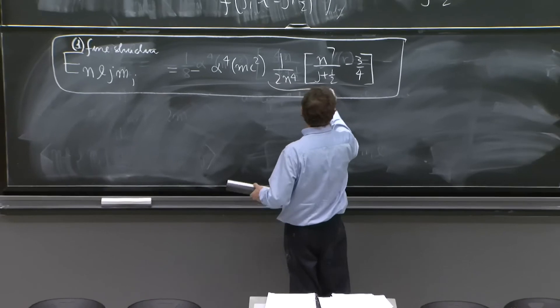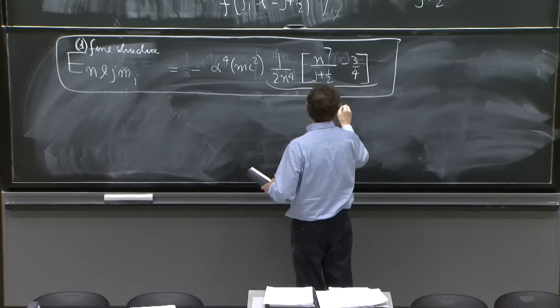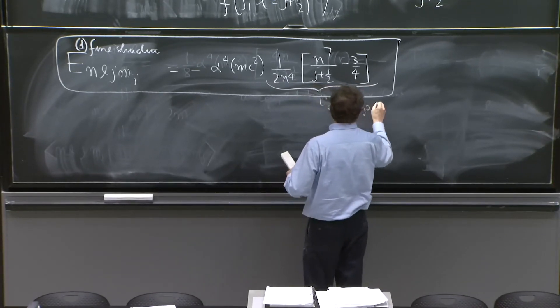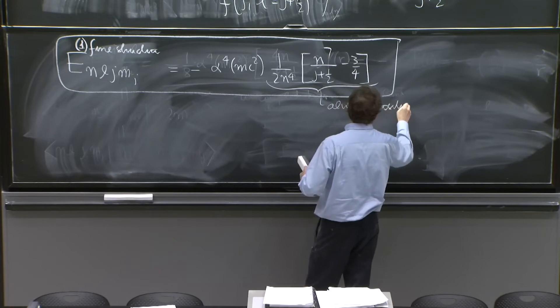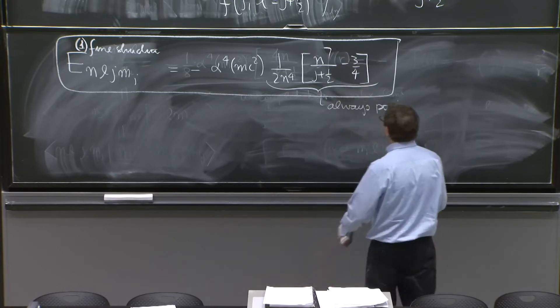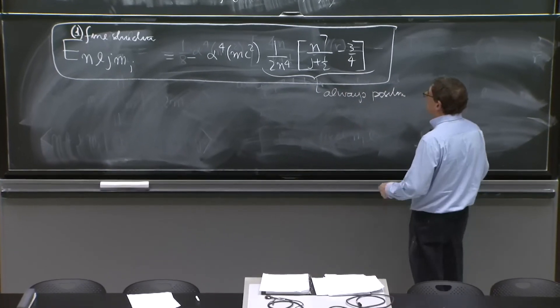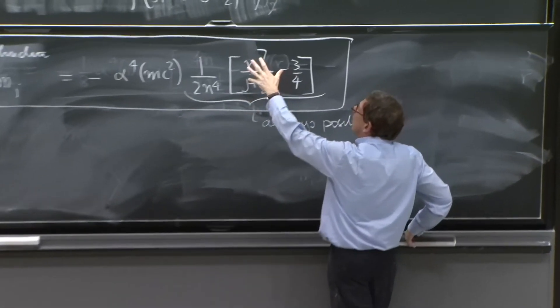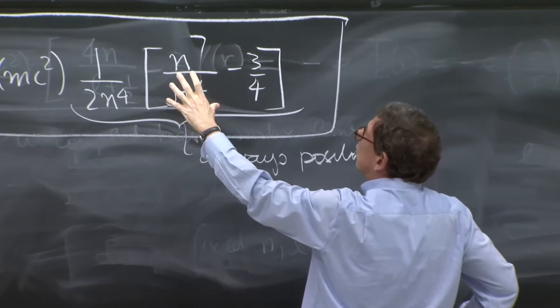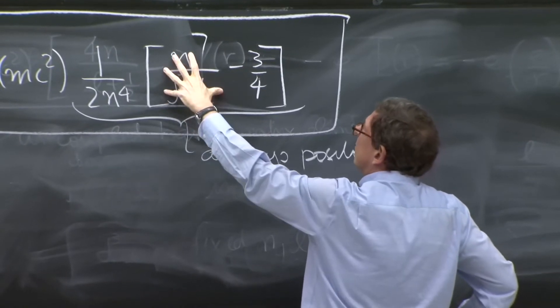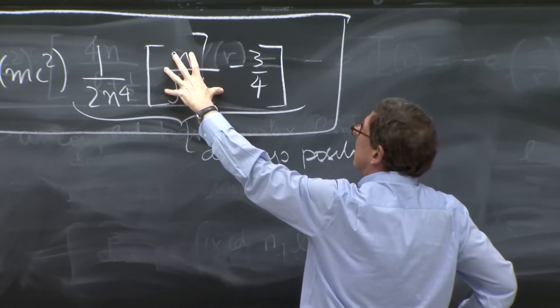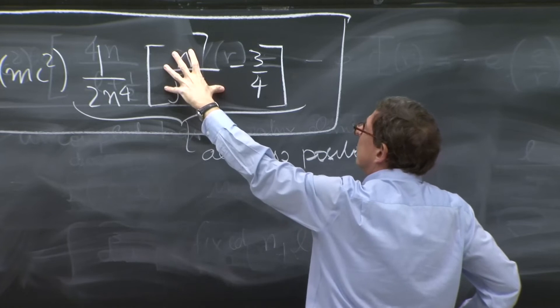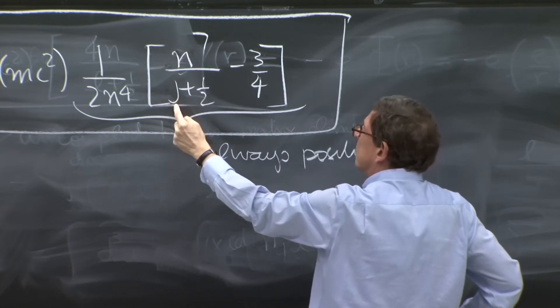But this quantity over here, this numerical quantity, is always positive for any state in the hydrogen atom. You can see that because j max, the maximum value. So this is negative. So you need to know what is the minimum value of this quantity to see if it goes negative.